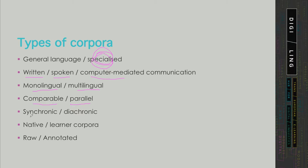Normally a specialized corpus would be synchronic and normally it would contain texts produced by native speakers, although this is not completely necessary. And then depending on what we have available, we may build corpora out of raw texts or we may have them annotated in some way or another.